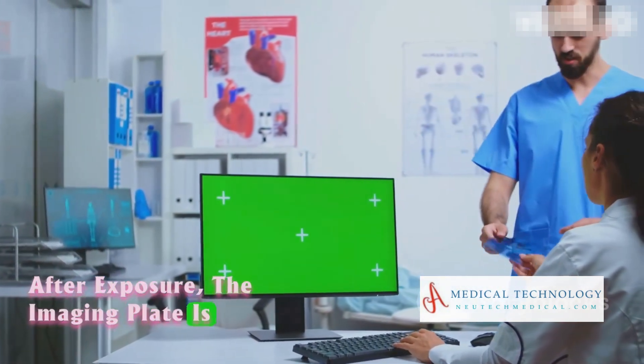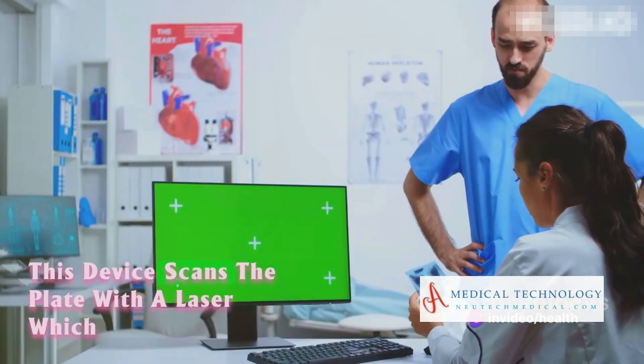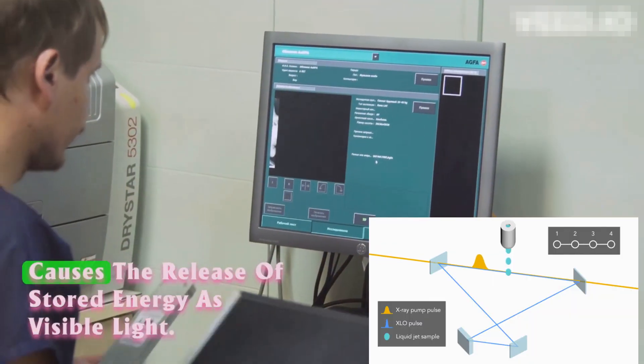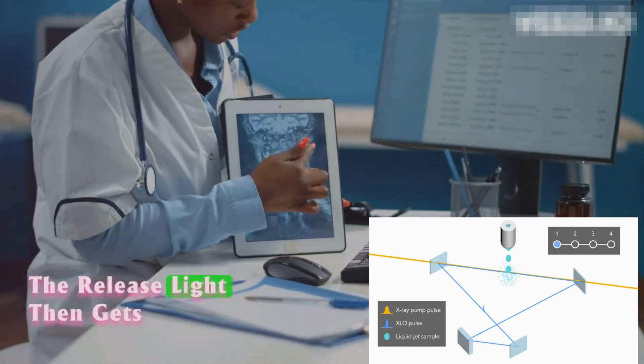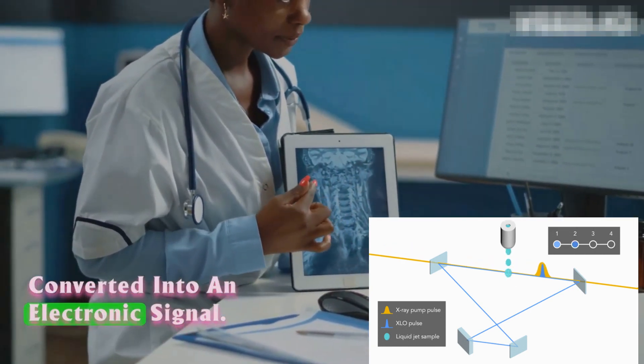After exposure, the imaging plate is processed in a CR reader. This device scans the plate with a laser, which causes the release of stored energy as visible light. The released light then gets converted into an electronic signal.